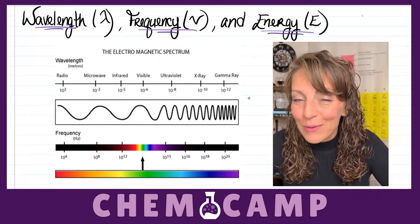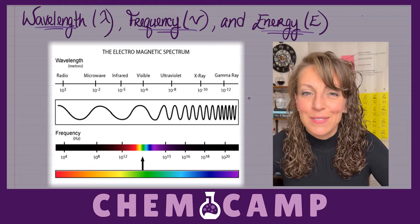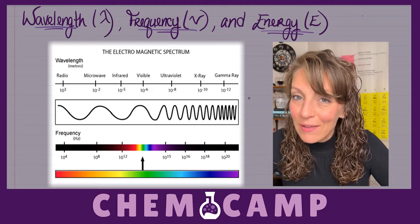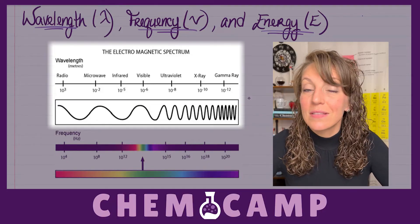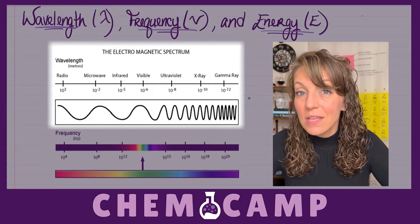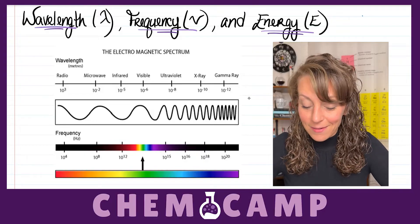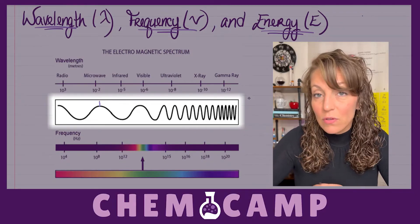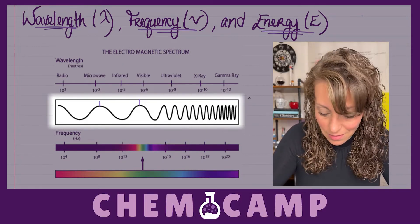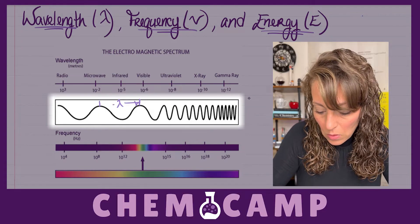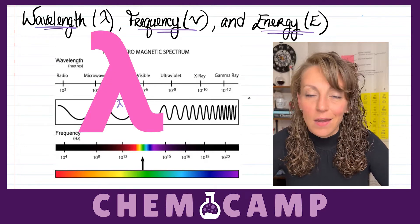First and foremost, the electromagnetic spectrum organizes all the different types of electromagnetic radiation according to wavelength, where wavelength is the distance or length between two consecutive crests or troughs in a particular wave. So if we consider our diagram here and we go from the first full crest to the second full crest in that wave, that would be one wavelength. Wavelength is represented by the Greek letter lambda and looks like an upside down y.